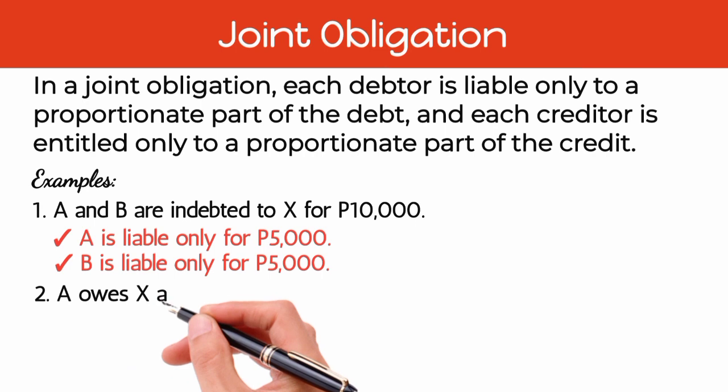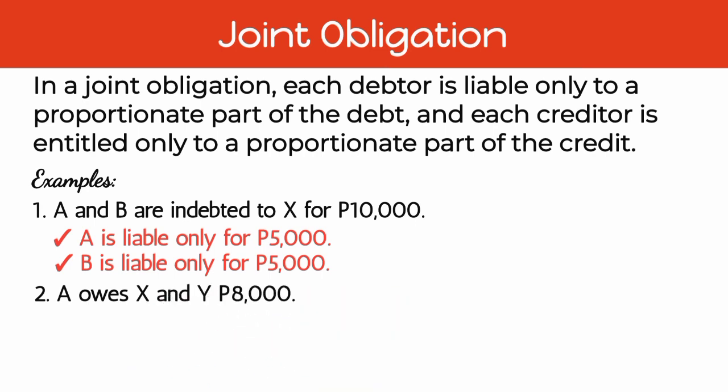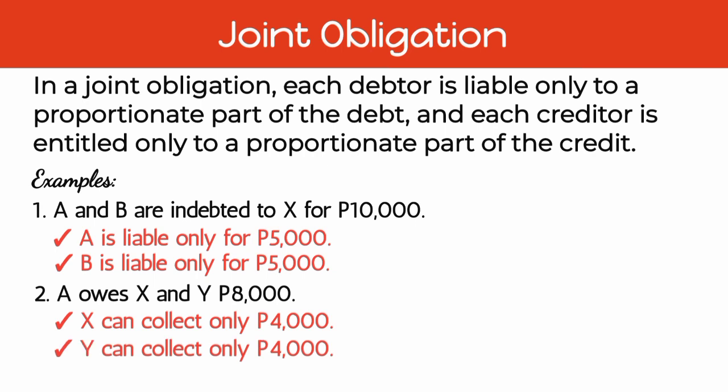Example number two: A owes X and Y 8,000 pesos. Dito naman, ang debtor ay iisa, si A. Ang creditor ay dalawa, si X at si Y. Dahil joint obligation ito, X can collect only 4,000 pesos. Ganon din si Y — Y can collect 4,000 pesos only. Ang pwede lang nilang i-collect ay yung proportionate part nila doon sa pautang. Since 8,000 pesos yung pautang at dalawa yung creditor, i-divide yung 8,000 pesos ng dalawa, so 4,000 pesos ang proportionate part ng bawat isa.